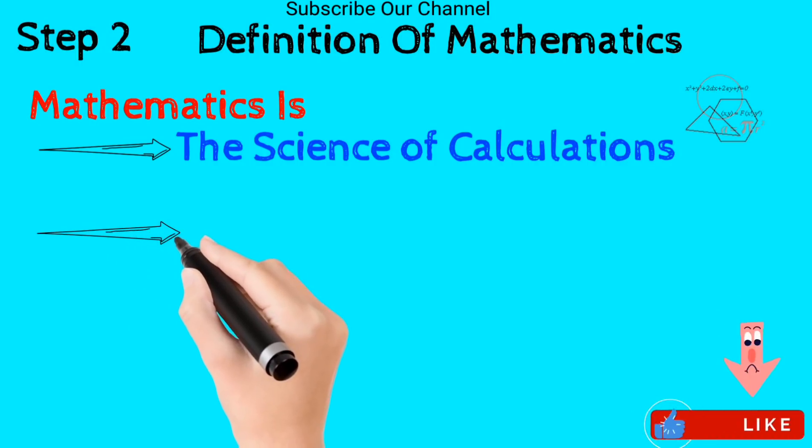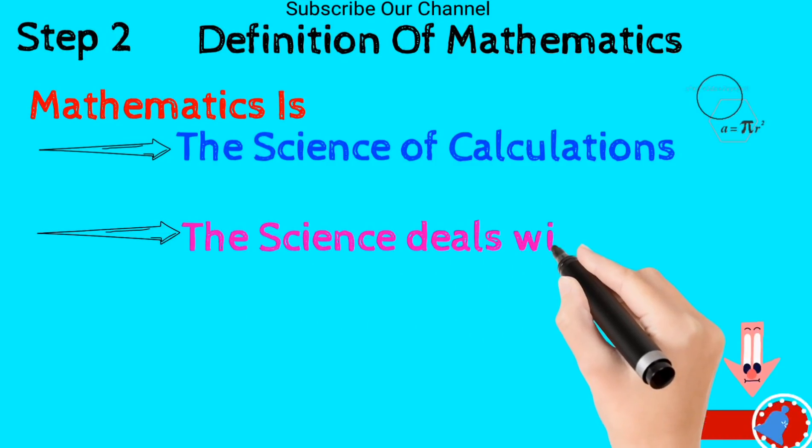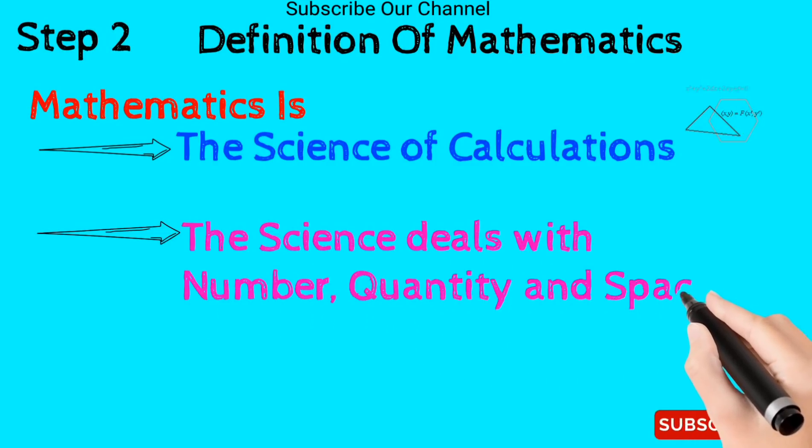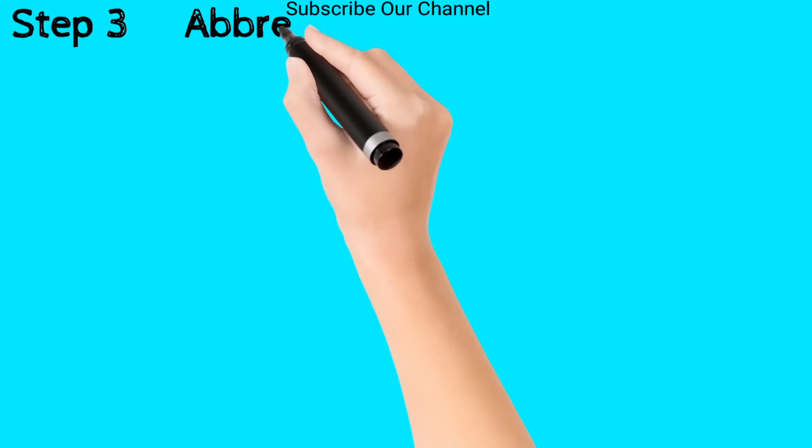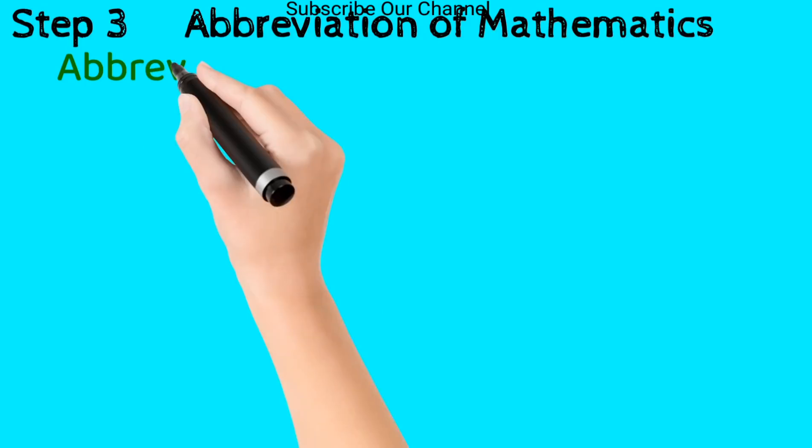Mathematics is the science which deals with numbers, quantity, and space. Step number three: abbreviation of mathematics. Abbreviation of mathematics is MATH. Full form of mathematics: